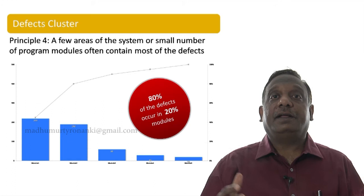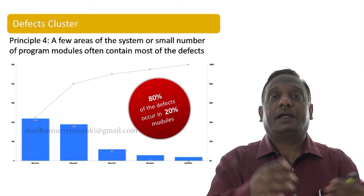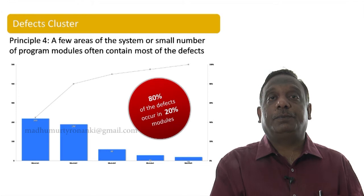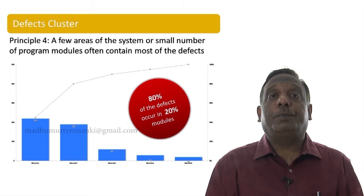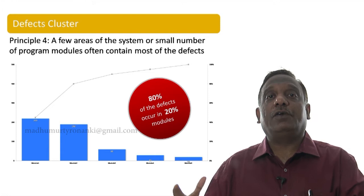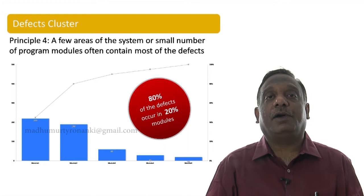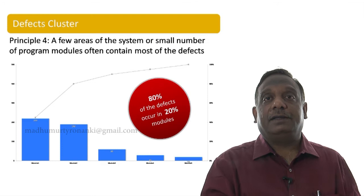As a good tester, you should go to the release one system testing data and plot a histogram of defect distribution by subsystem. If you find that 80 percent of defects occurred in only 20 percent of modules, where do you put more effort? Do you test module 1 and module 2 more, or do you focus on modules 3, 4, and 5 because fewer defects were found there previously?